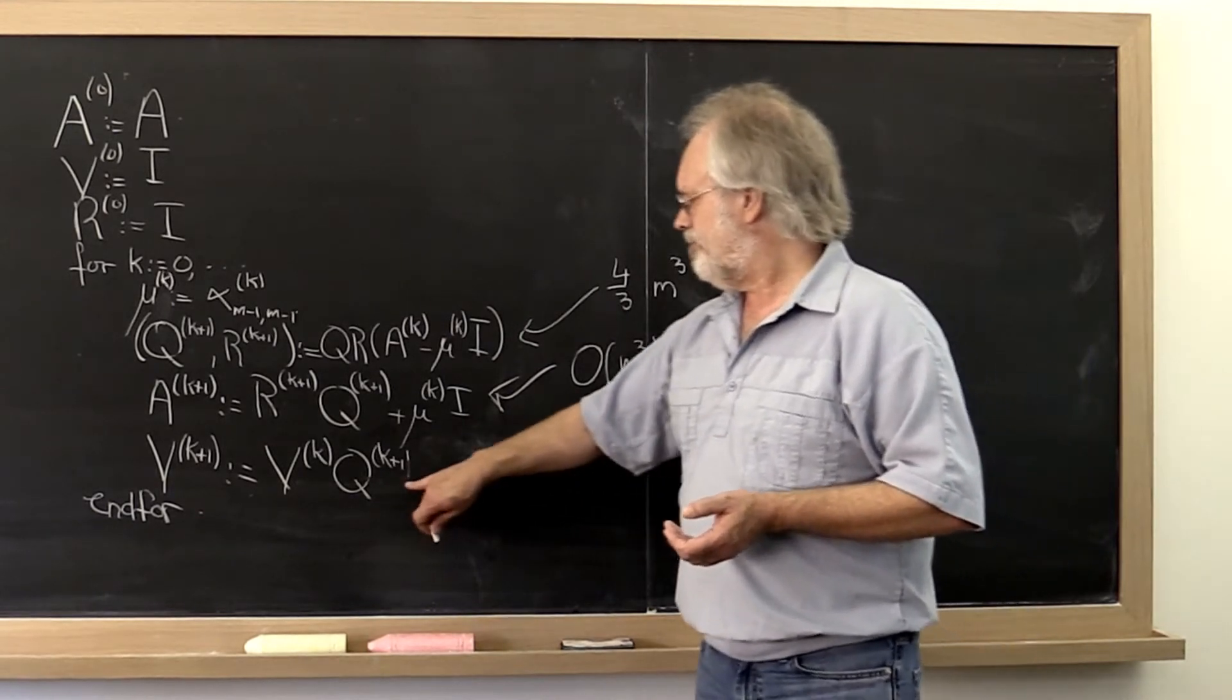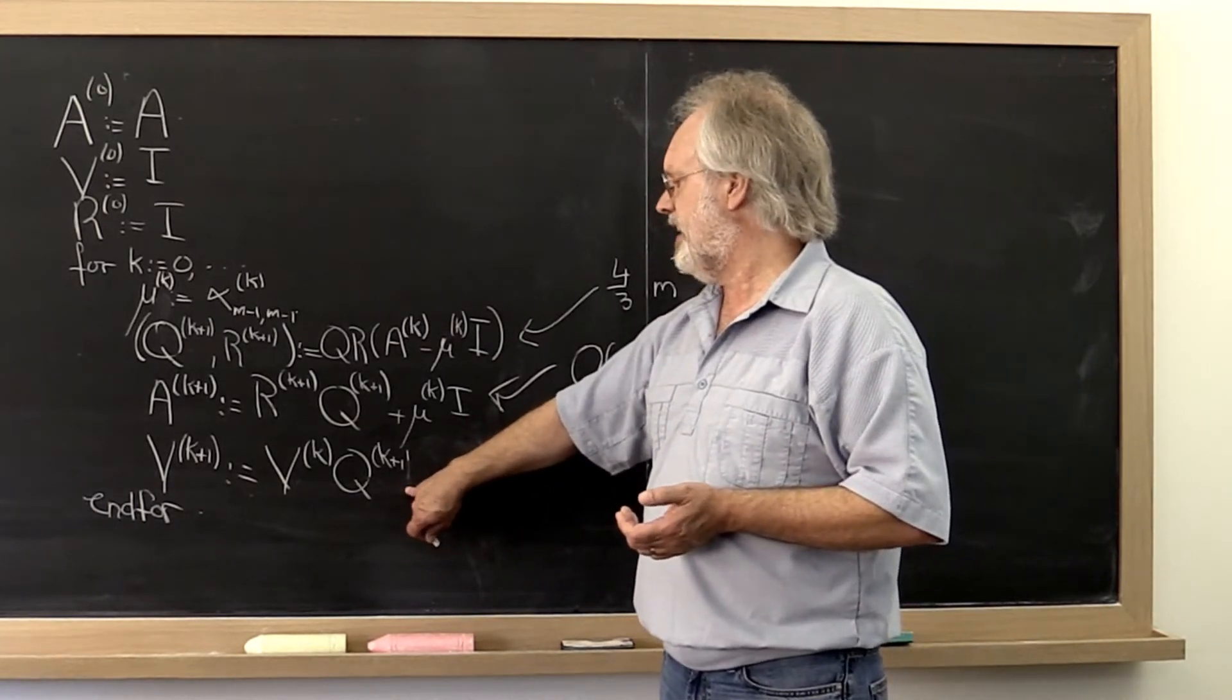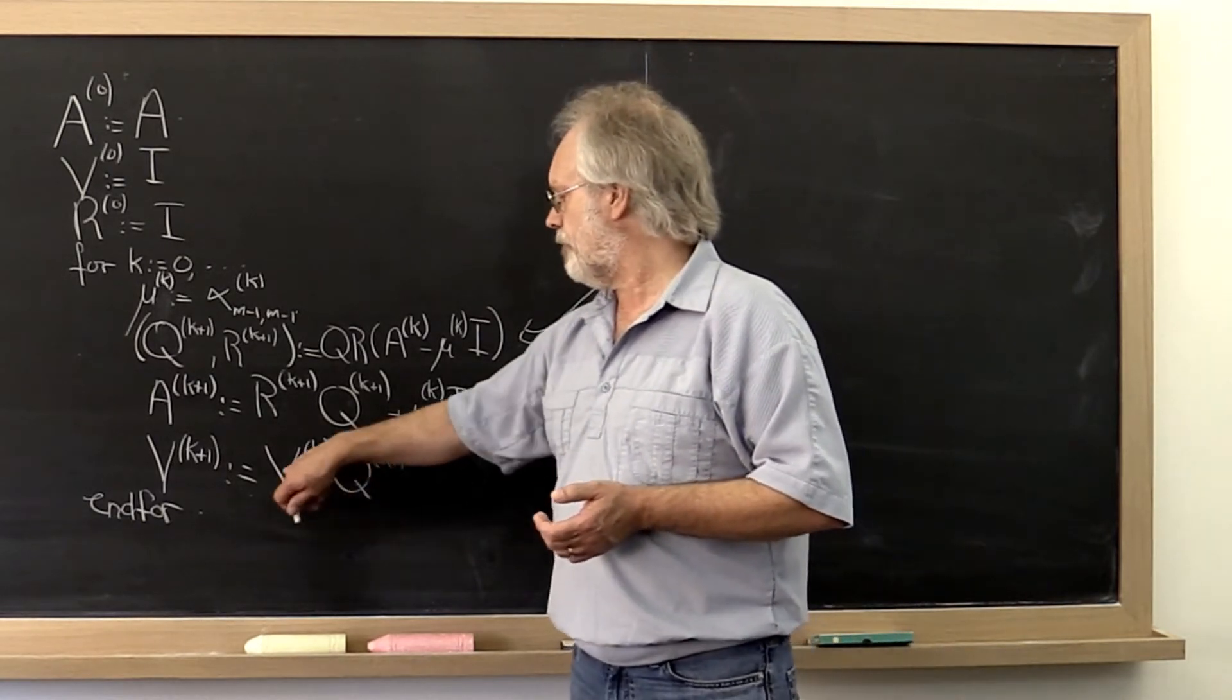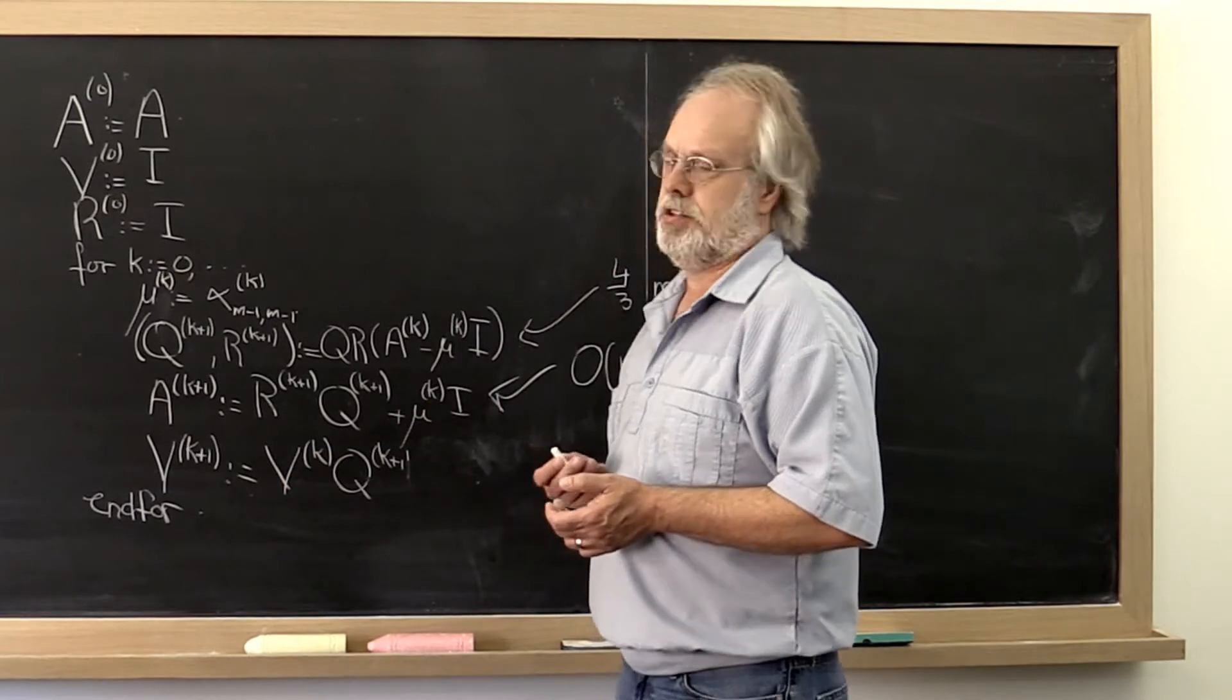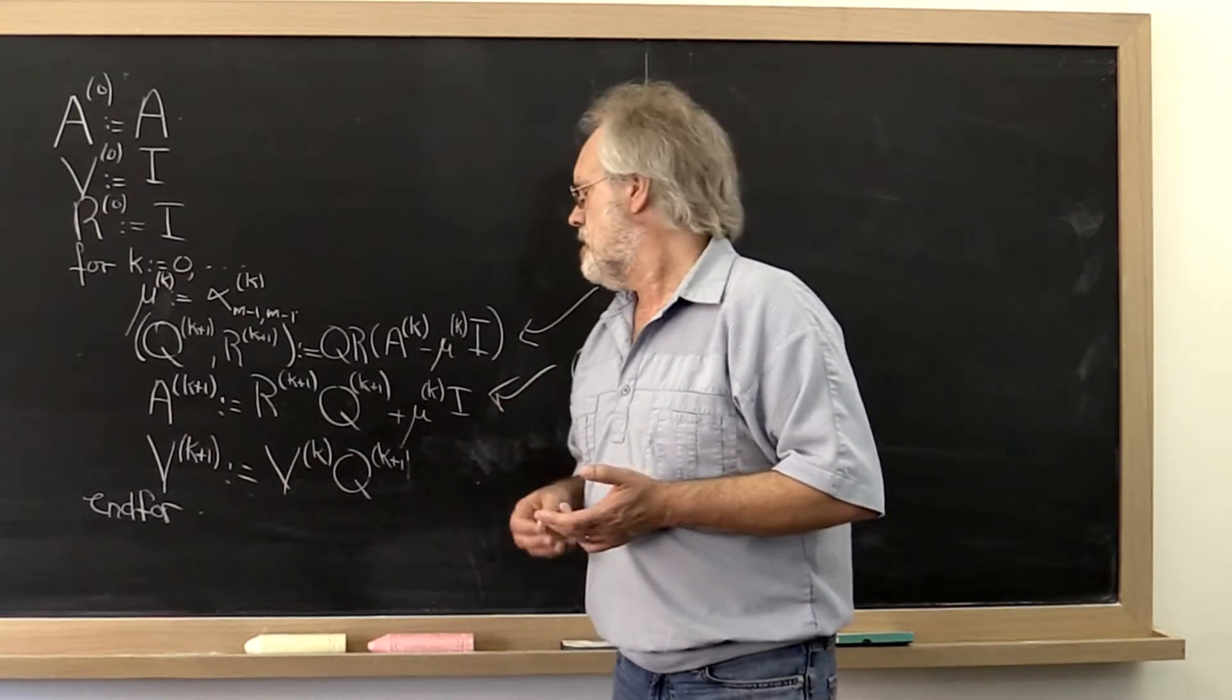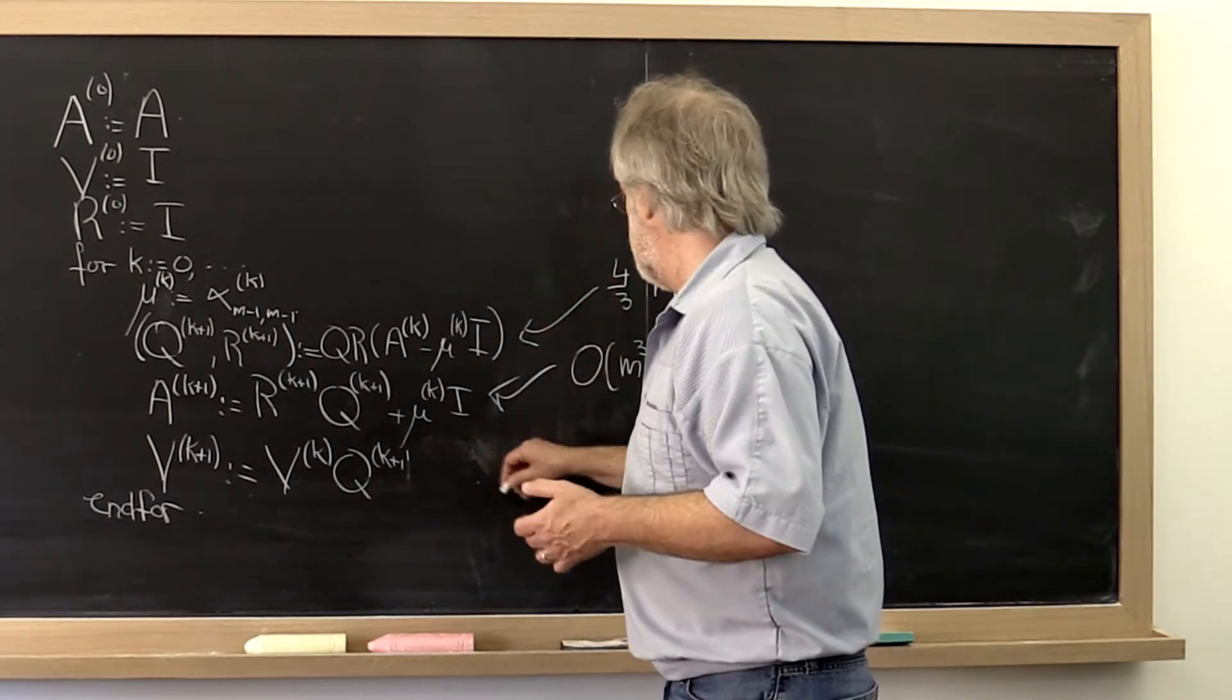And then we should be able to carefully analyze what the cost of applying the Householder transforms from the right to a matrix V is. But let's be sloppy there too.